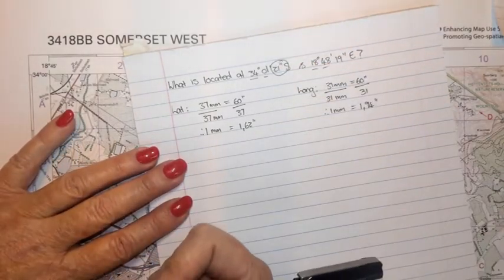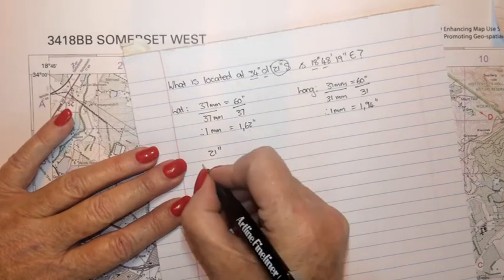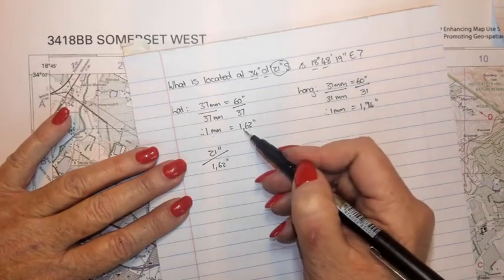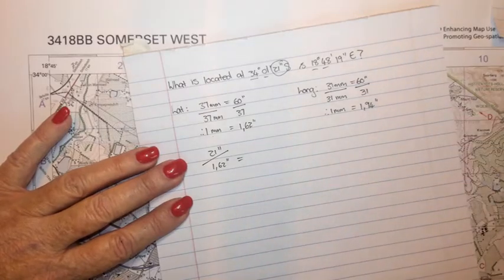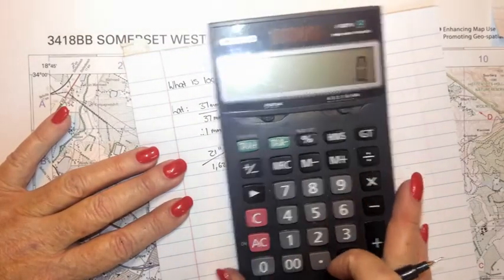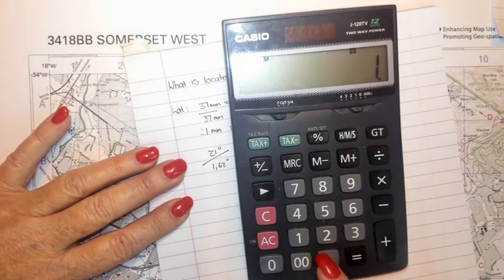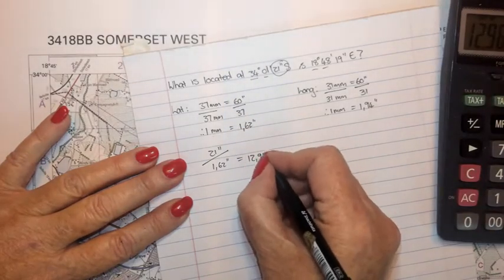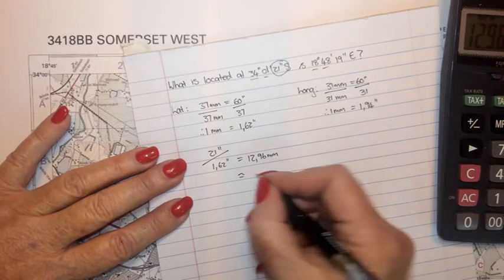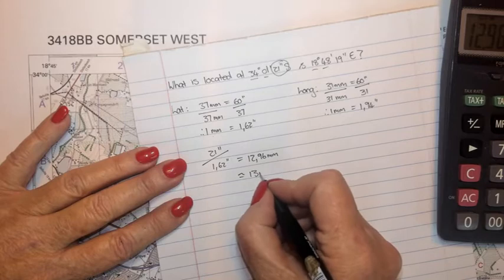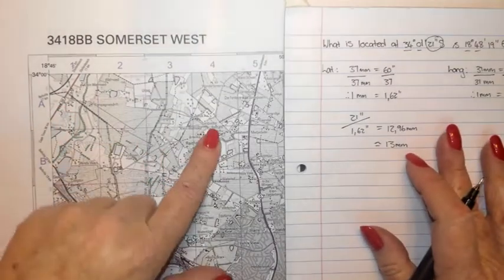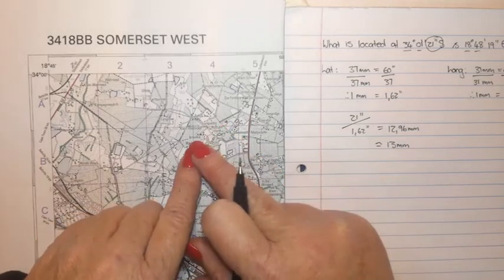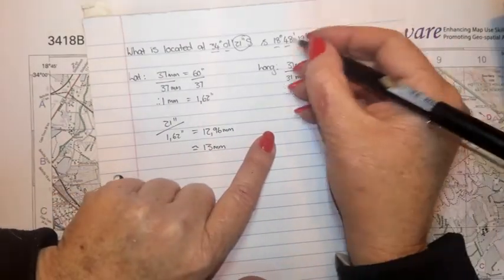What I now do is take the latitudinal seconds — in this case 21 seconds — and divide by 1.62 seconds, because one millimeter equals 1.62 seconds. This gives me a millimeter distance: 21 divided by 1.62 equals 12.96, which I round off to 13 millimeters. So 13 millimeters from my reference line is where that feature is located.